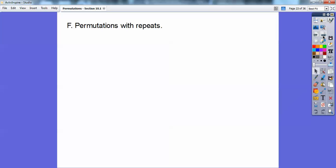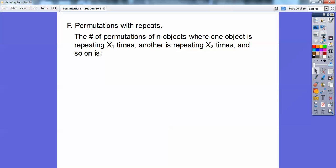Permutations with repeats. The number of permutations of n objects where one object is repeating x1 times, another object is repeating x2 times, and so on, is n factorial divided by the factorials of the number of repeaters. Say I had two p's repeating and three e's repeating. This is usually with letters, but it doesn't have to be. It could be with colors or gender or whatever.